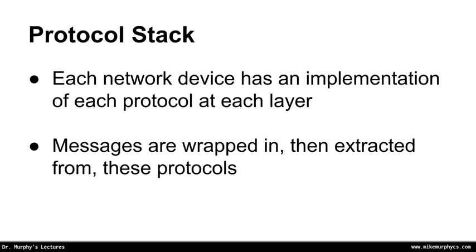When we send a message from one machine to another, that message has to traverse the network stack — or the protocol stack — on both devices. Each network device has an implementation of each network protocol that it can recognize at each layer. So if we support three or four different network layer protocols, each device in our network is going to have implementations for each of those possible protocols. The messages are wrapped in and then extracted from these protocols.